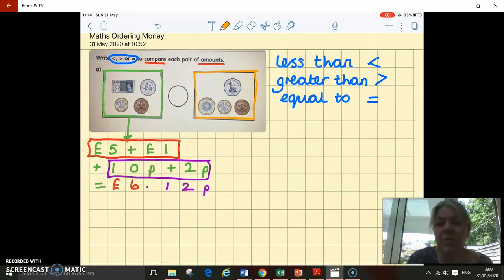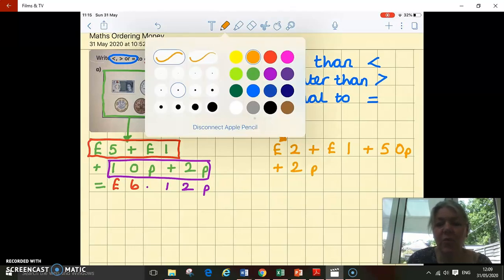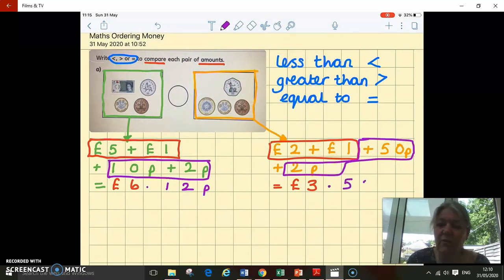I've still got to work out what's in the other box before I can compare. In this box, I've got £2, add £1, add 50 pence, and a 2 pence. Just like before, I'm going to calculate my pounds first: 2 add 1 equals 3. And then my pence: 50 pence and 2 pence equals 52 pence.